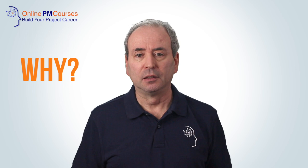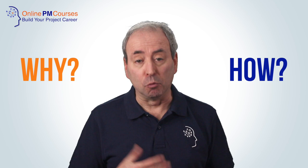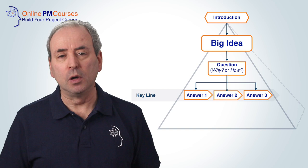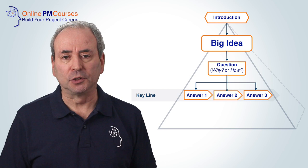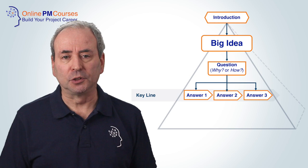Once you've stated your big idea, then you can elaborate. Your elaboration will depend on what question the audience is likely to ask, or what you want them to have asked so you can answer it. The two obvious questions are: why — how do you justify this conclusion, recommendation, or decision? Or how — how are we going to implement your recommendation, conclusion, or decision? Just as a work breakdown structure will have a key line, so too will your elaboration upon your big idea.